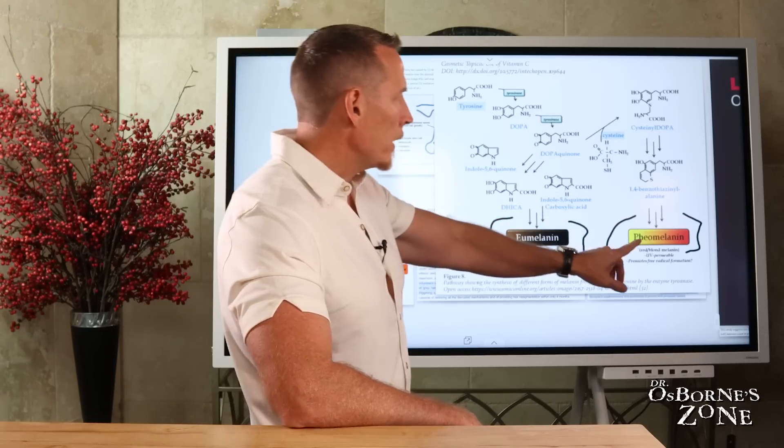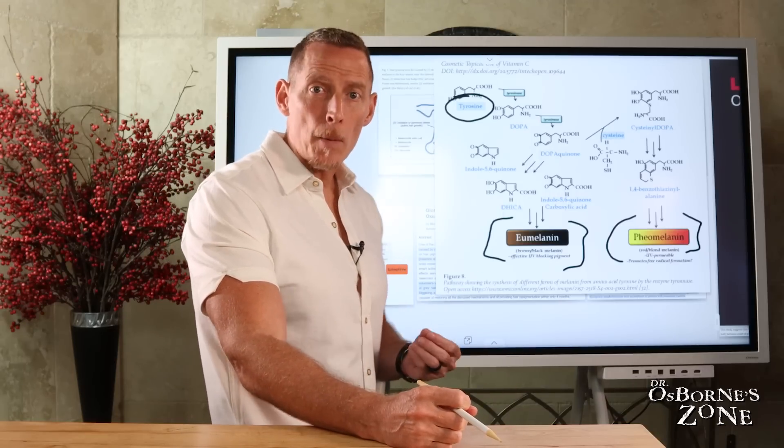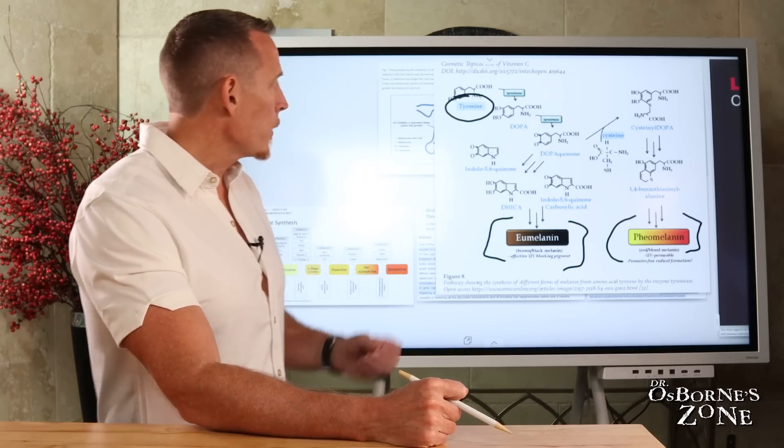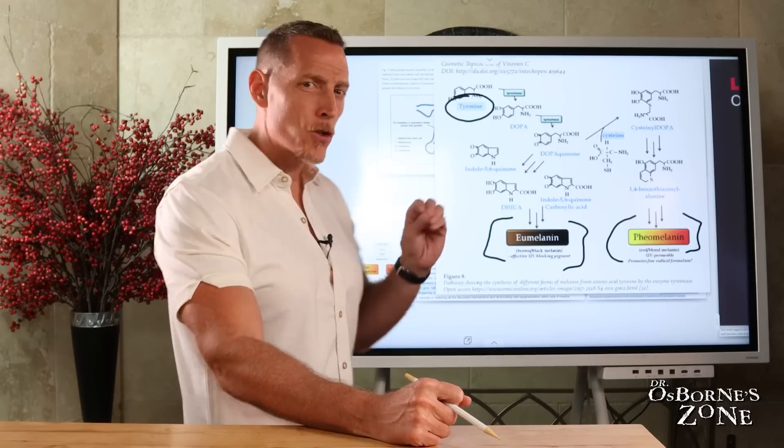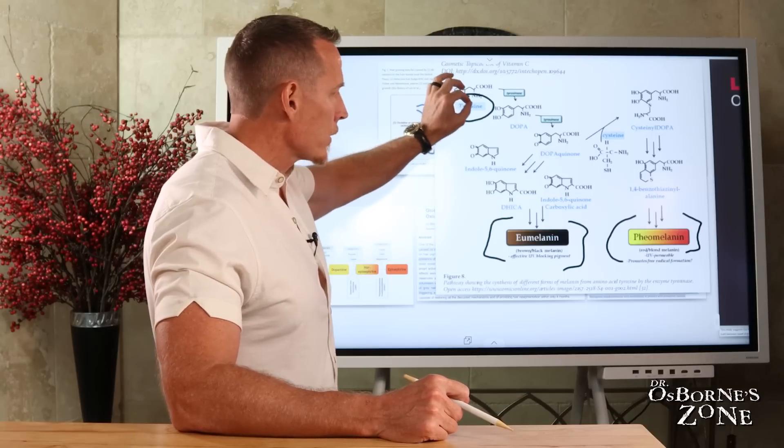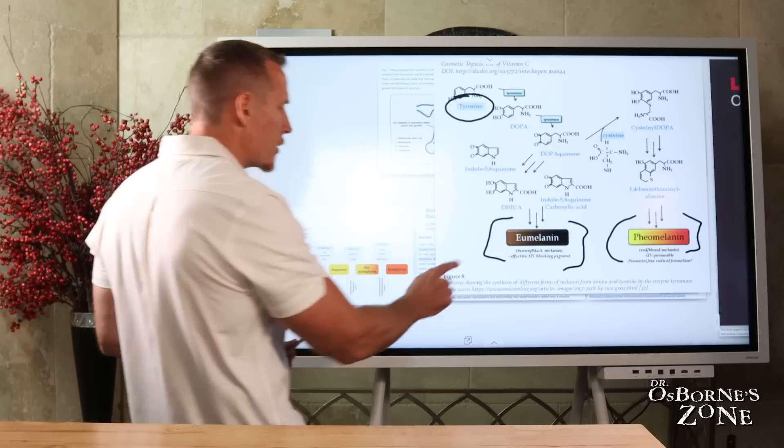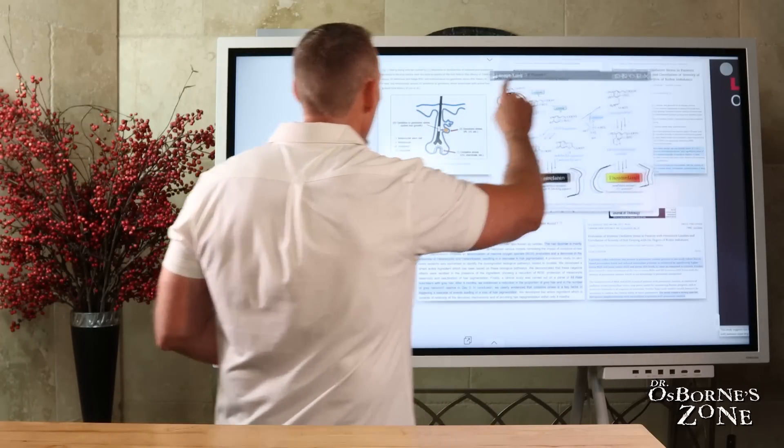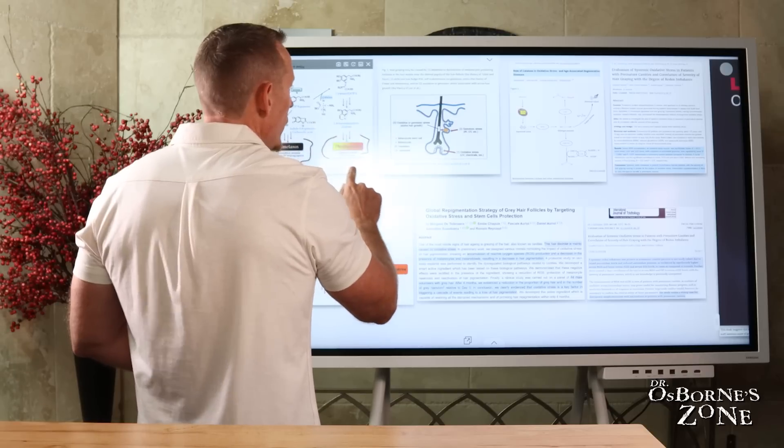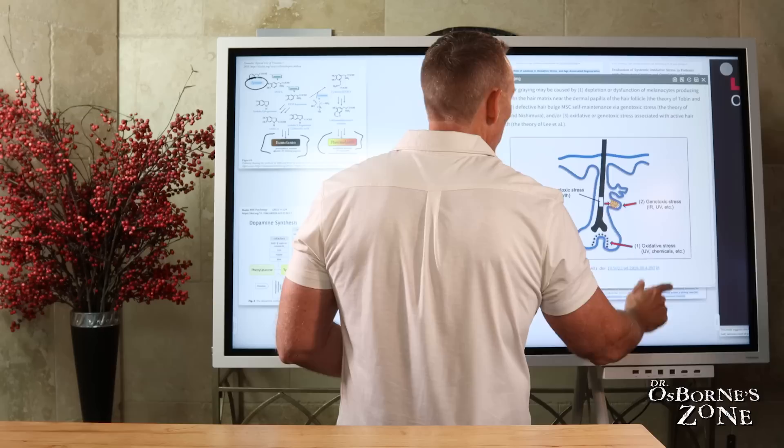Both of these pigments start from this very critical amino acid called tyrosine. Tyrosine is an amino acid that comes from the food that we eat in our diet. It's predominantly found in protein-rich foods. We'll dive more into the chemistry of this because nutritionally, this is super important. There are a lot of nutrients that aren't listed on this diagram that play a critical role in how tyrosine ends up as one of these two types of pigments. But this is how hair pigmentation occurs. Now that you have a general understanding of that, let's talk a little bit about what happens that causes discoloration or premature graying of the hair.